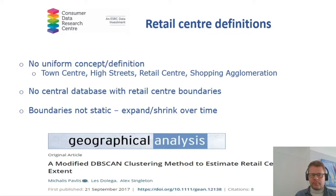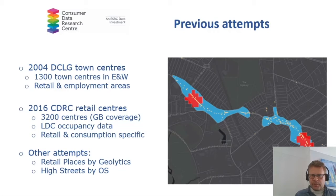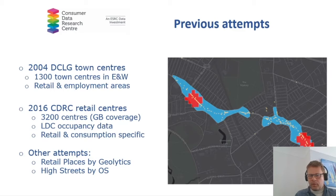In the past, there were a number of different attempts at delineating retail centres, and some of them were used for quite long times. For example, the ones from UCL CASA developed in the early 2000s were adopted by the then DCLG — Department for Communities and Local Government — and they were using them to generate statistics on town centres. There were about 1,300 of them in England and Wales, and they were called town centres because they included retail and employment areas.